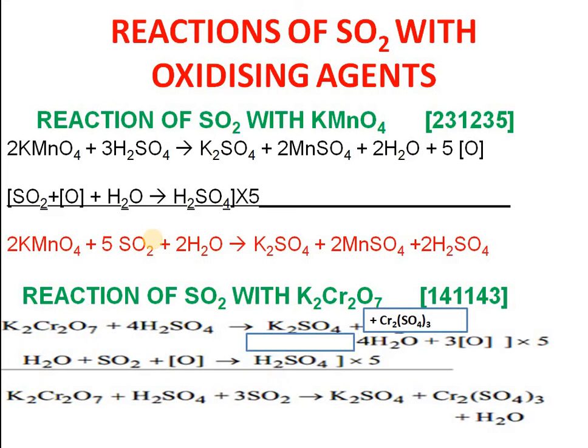Similarly, for the reaction with potassium dichromate, remember the number 1, 4, 1, 1, 4, 3. K₂Cr₂O₇ plus H₂SO₄ gives K₂SO₄, Cr₂(SO₄)₃, water, and free oxygen. Using the partial equation method — H₂O + SO₂ + O → H₂SO₄ — multiply by 3 to obtain the final equation: K₂Cr₂O₇ + H₂SO₄ + 3SO₂ → K₂SO₄ + Cr₂(SO₄)₃ + H₂O. This is called the partial equation method.